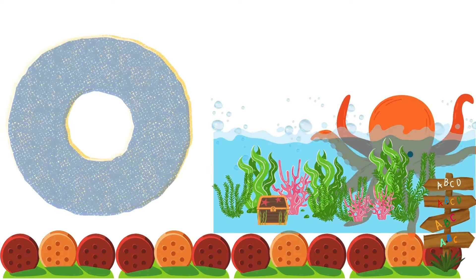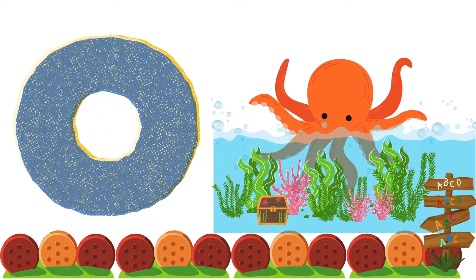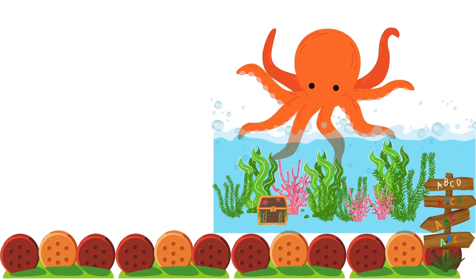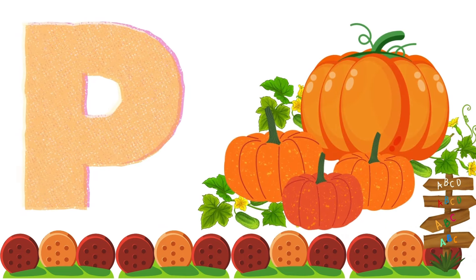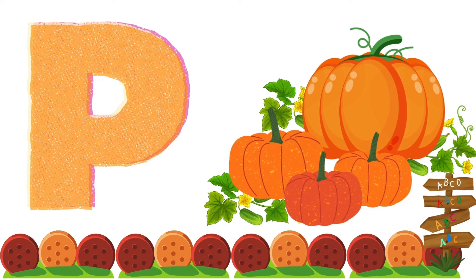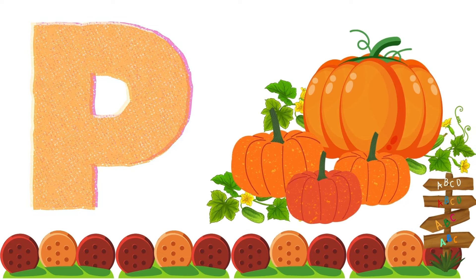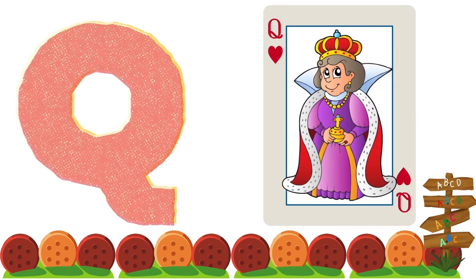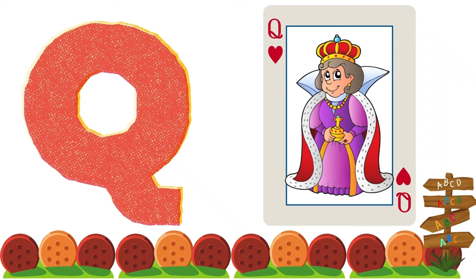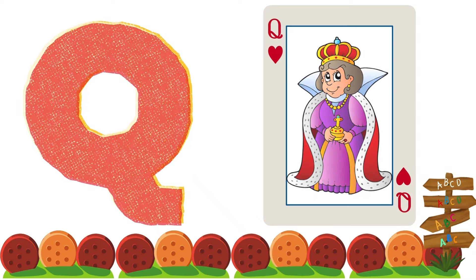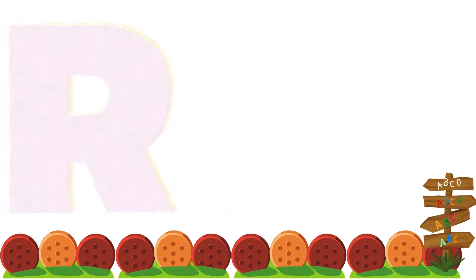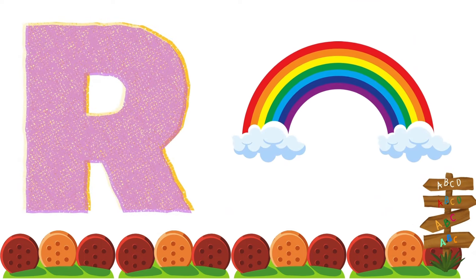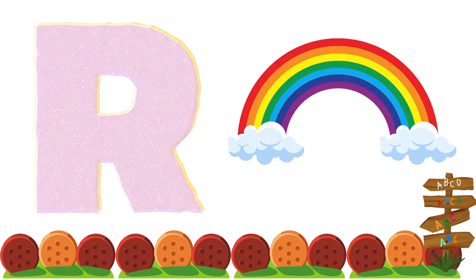O is for Octopus. P is for Pumpkin. Q is for Queen. R is for Rainbow.